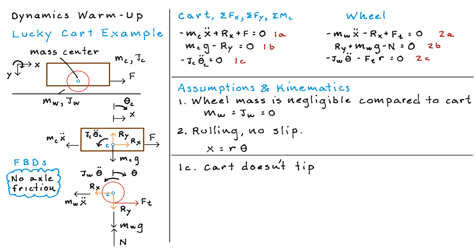Now let's pick apart these equations and do some analysis. So for equation 1C, as I mentioned before, the cart doesn't tip. So that's why it's lucky. Also, if we go over to equation 2C, we can see that because JW is equal to zero, it also means that the traction force is equal to zero.